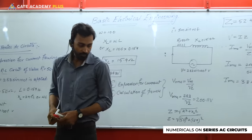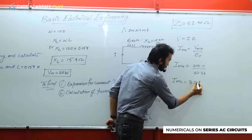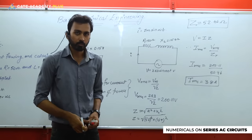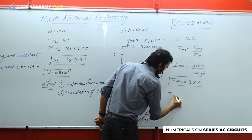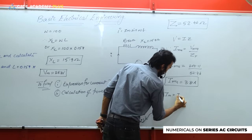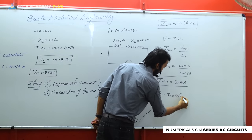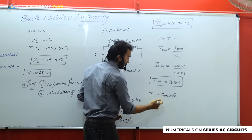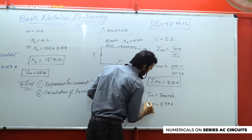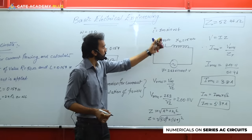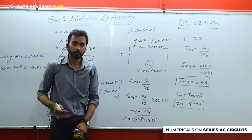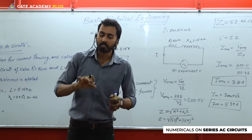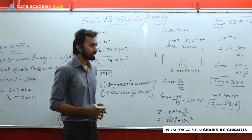Irms ≈ 3.81 amperes. Converting to Im: Im = Irms × √2 = 3.81 × √2 ≈ 5.39 amperes. This is the value of Im. To complete the current expression I = Im sin(ωt ± φ), we still need the value of ω — which is 100 — and the lead/lag condition with the phase angle φ.